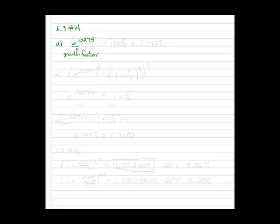The reason that's important is if we can identify our growth factor to get the growth rate, all we have to do is subtract 1 and turn it into a percent. Calculating this out gives us 2.788%.